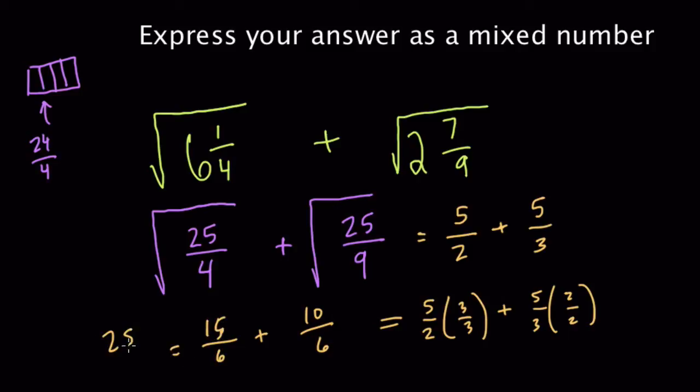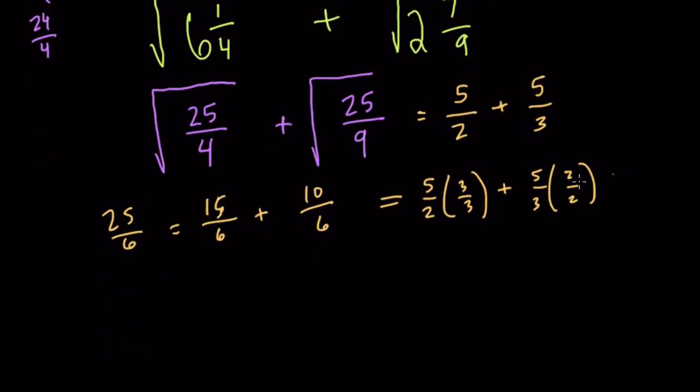Now we have 25 sixths, and we can work this as a mixed number. 6 goes into 25 four times, so it's four wholes. And what's left over? 1 sixth. So that's our answer. All right, thanks.